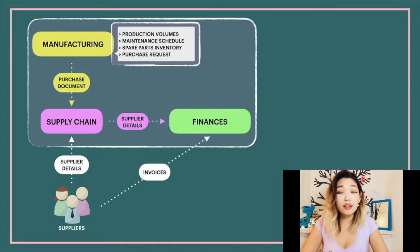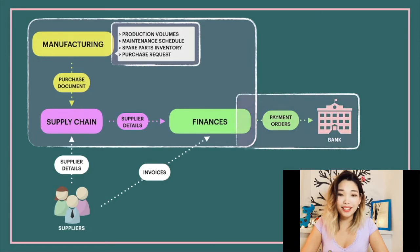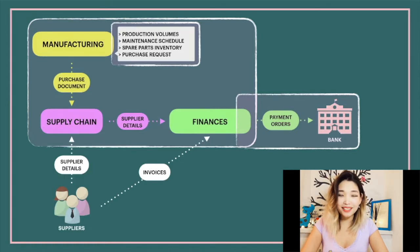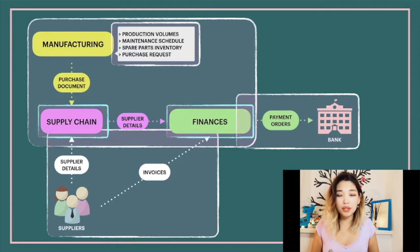Now let's say that suppliers send an invoice to the finance department, which then sends a payment order to the bank. Here we have another example of data in motion that is sent over the unprotected network to external third parties. We also have an example of data in use — when suppliers provide their details to us, the recipient temporarily holds this information as part of random access memory, CPU cache, or registers.